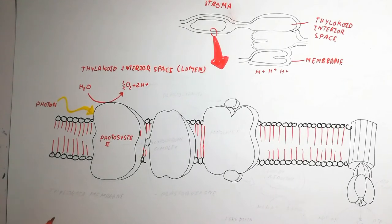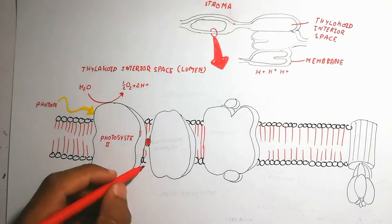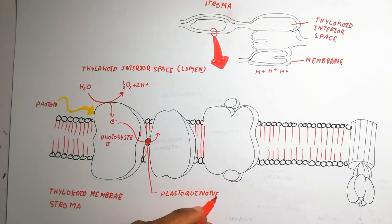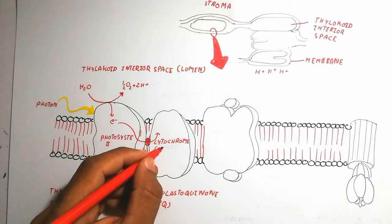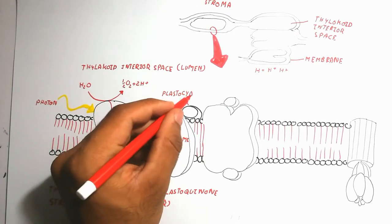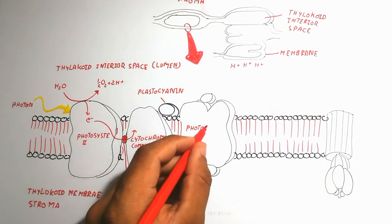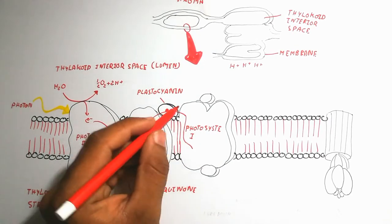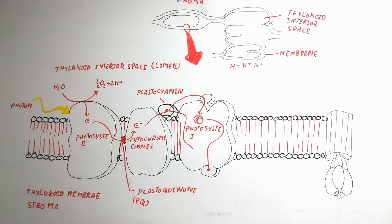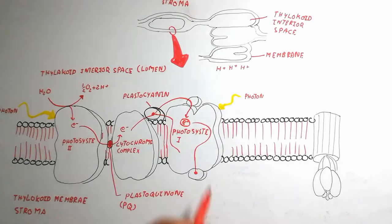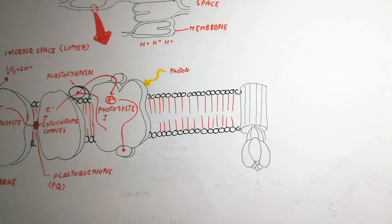Electrons from water enter Photosystem II, which transfers them to a protein acceptor — plastoquinone (PQ). The electrons move to plastocyanin, losing energy in the process. Photosystem I then accepts the electrons and passes them downward to ferredoxin, another electron acceptor, while a new photon is absorbed to re-excite the electrons.